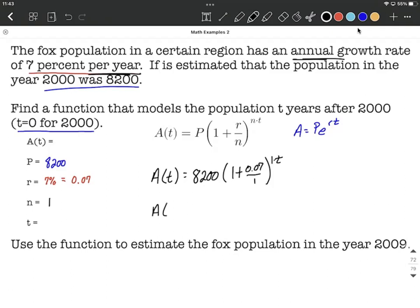So a little bit of simplifying, getting a nicer answer. We're going to have 8,200, and then 1 times t up in the exponent is just t. On the inside there, 0.07 divided by 1 is just 0.07.